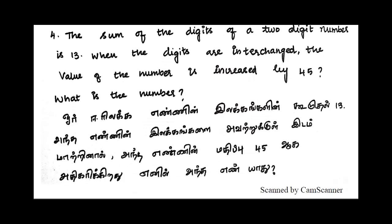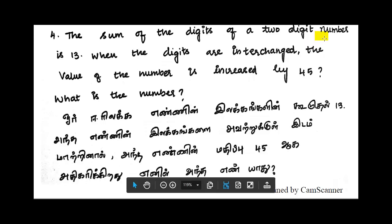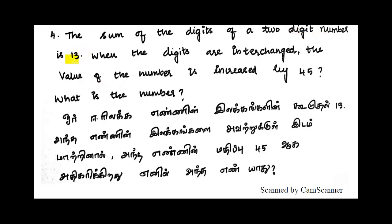Now the fourth sum. The sum of the digits of a two-digit number is 13.